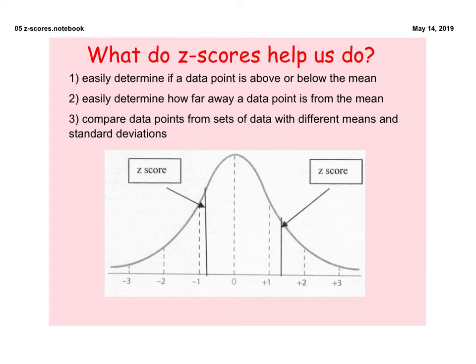Number two, it's easily determining how far away from the mean the data point is. So again, I had mentioned that little example. If you have a z-score at, let's say, 1.3, then you know you're right here. You are that far from the mean. If your z-score is negative 0.8, then you are there. It's very clear to determine where you are on the bell curve. Number three, you can compare data points from sets of data that have different means and standard deviations, such as the problem that I just talked about.